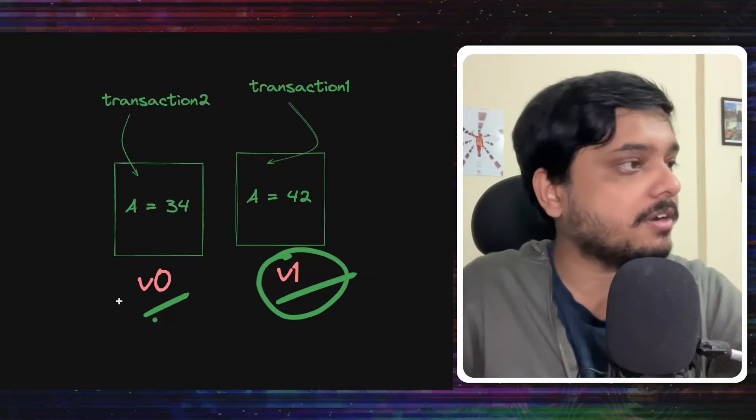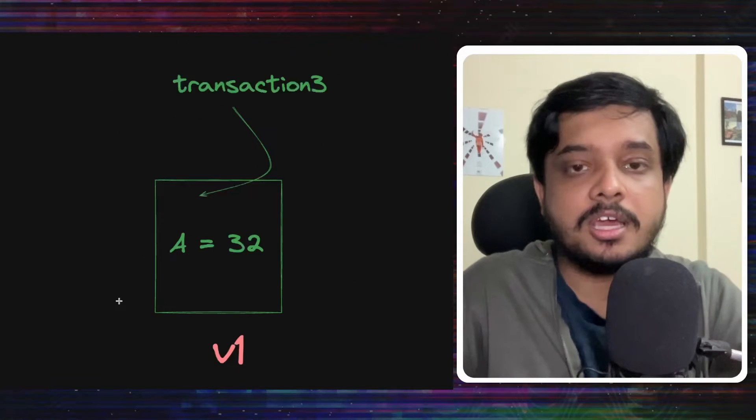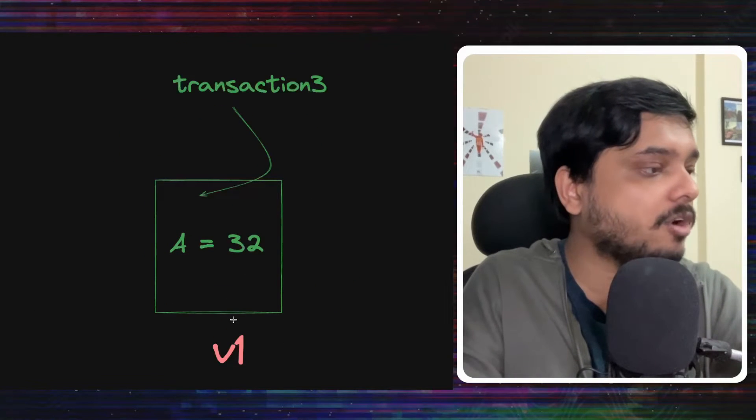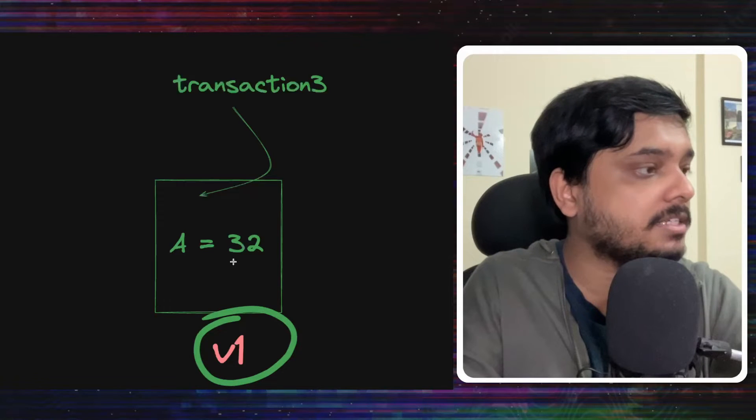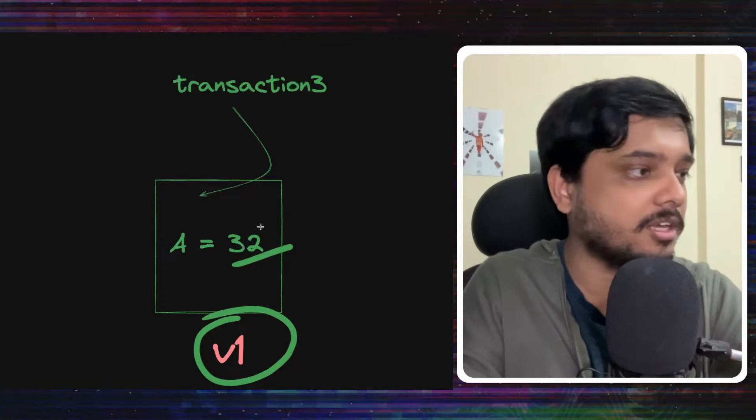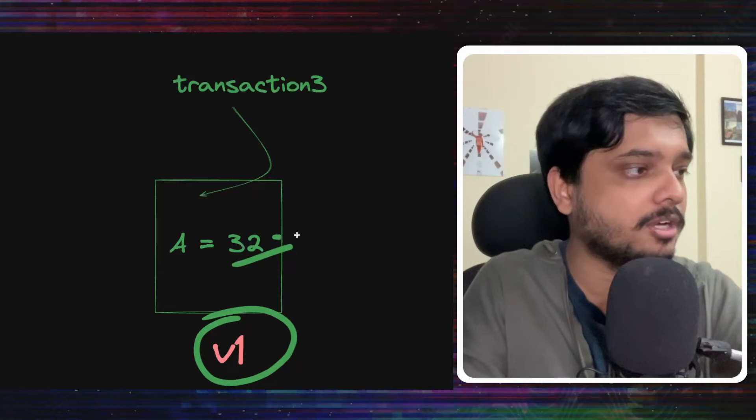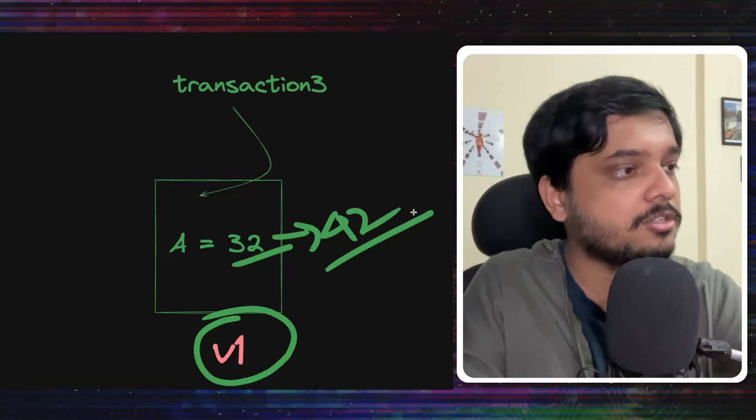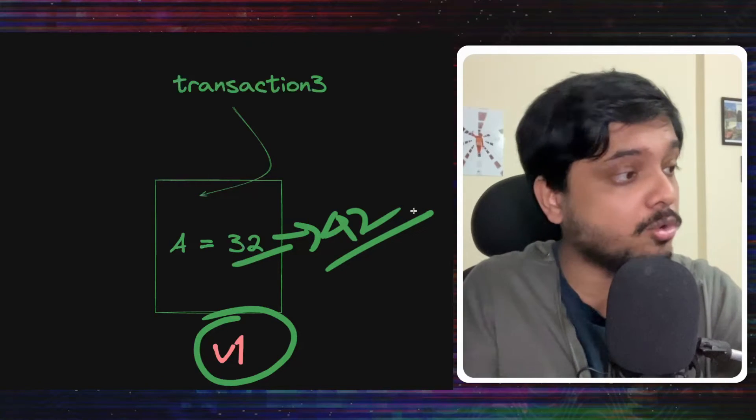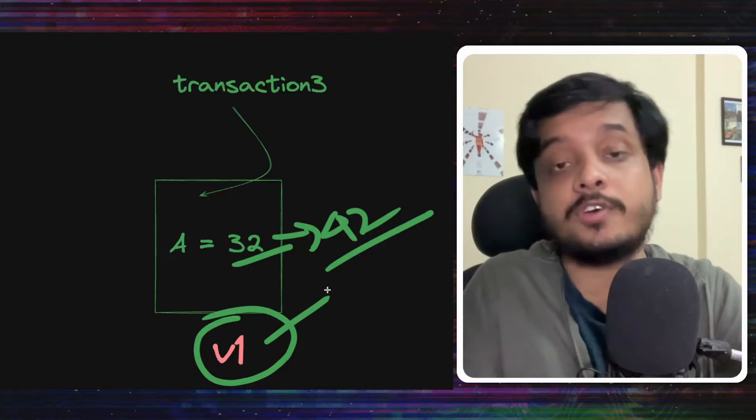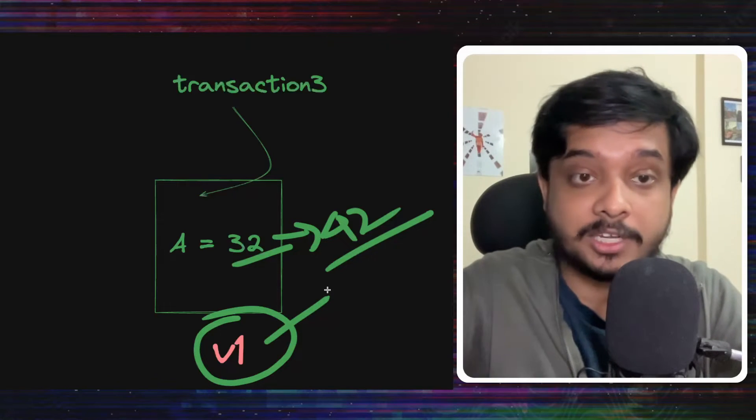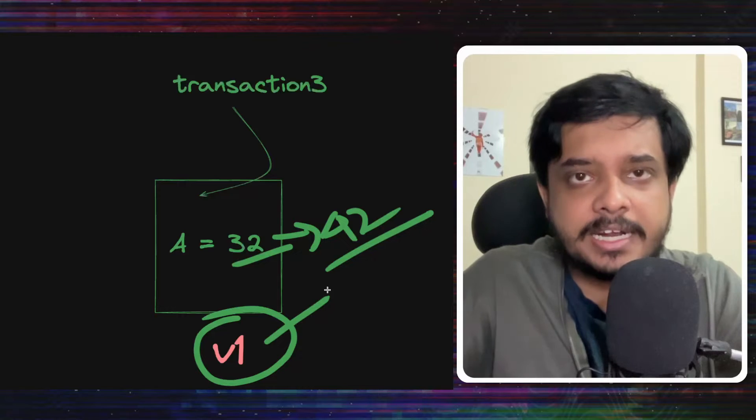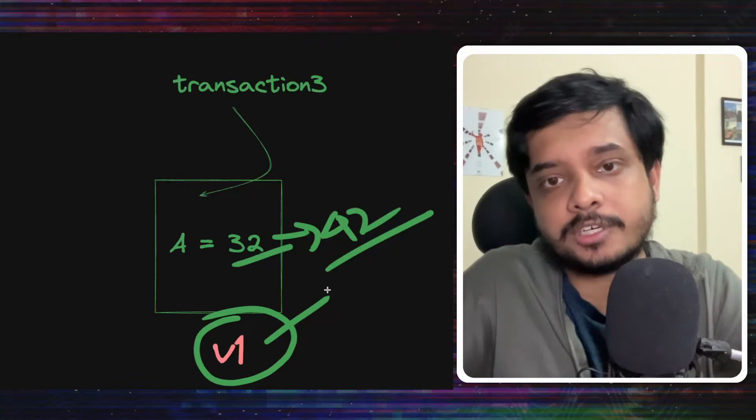So let's say a new transaction, transaction 3 comes along, it would always read from v1 where it says that A is 42. It will read only from v1 because it is the latest version of the data. And not just transactions, indexes would also point to this latest version.